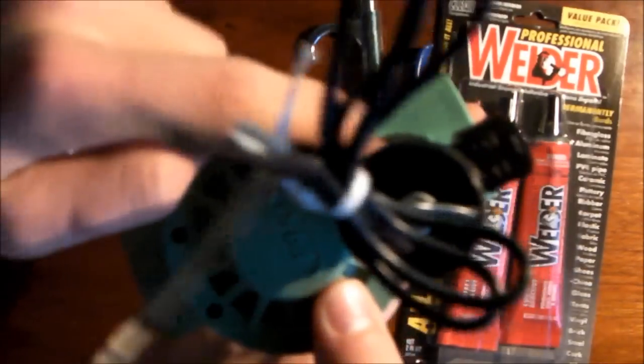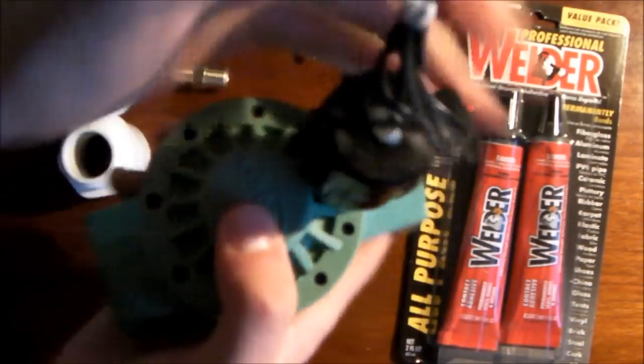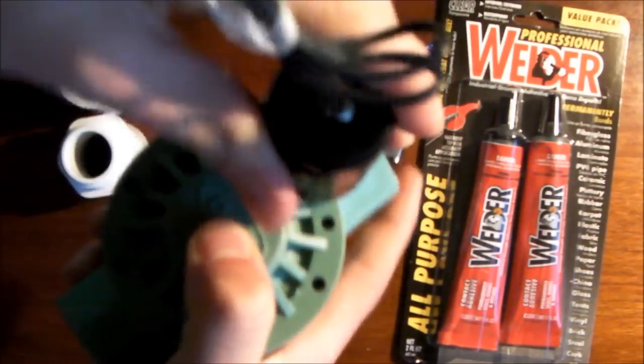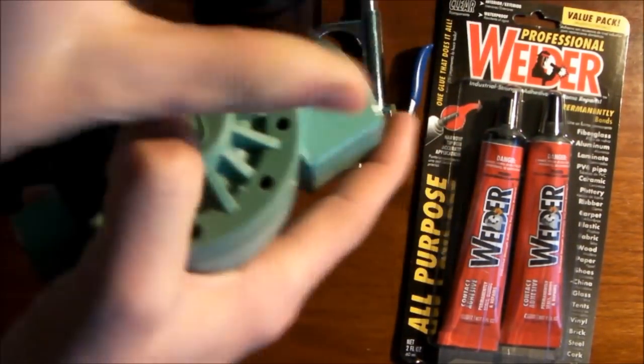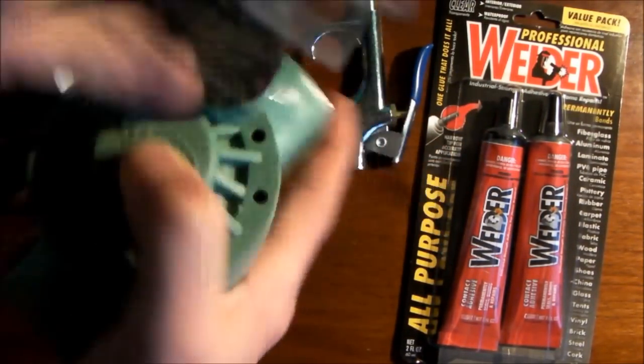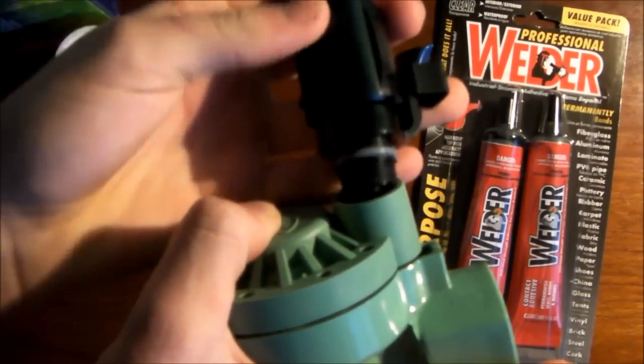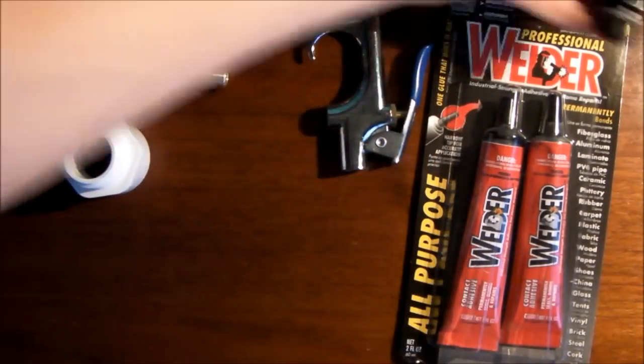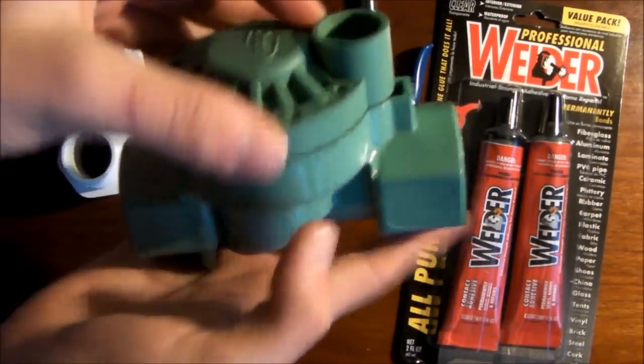So first thing you're going to do is unscrew the six screws, which I've done already. You're also going to unscrew this solenoid. And make sure you get both black pieces off with it. So you can see there's one here and there's one here. Those you don't need anymore, you can throw them out.